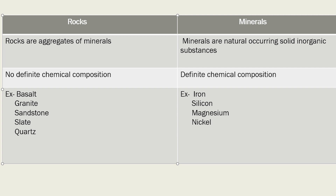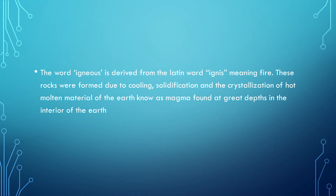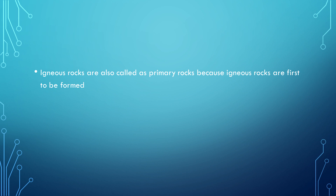Now that you've known the introduction of rocks, my friend Kiranmay will continue with igneous rocks. Hi, I'm Kiranmay from 9B. I'm here to explain igneous rocks, which is the first type of rock. The word igneous is derived from the Latin word meaning fire. These rocks were formed due to cooling, solidification, and crystallization of the hot molten material of the earth, known as magma, formed at great depths in the interior of the earth. Igneous rocks are also called primary rocks because igneous rocks were first to be formed.